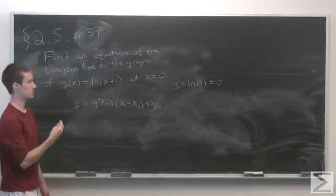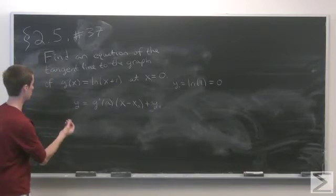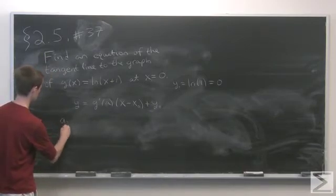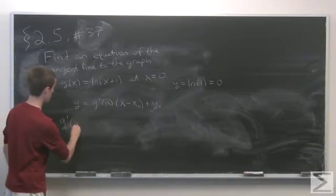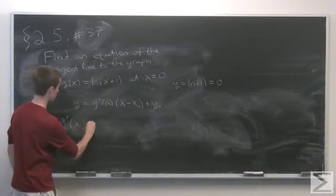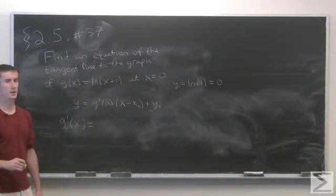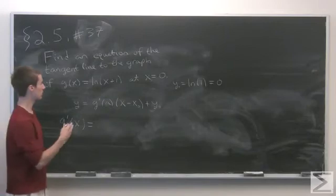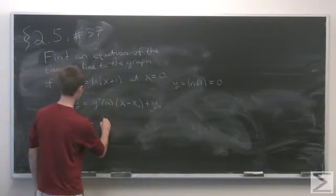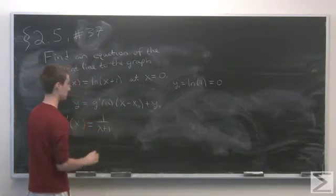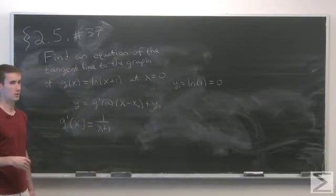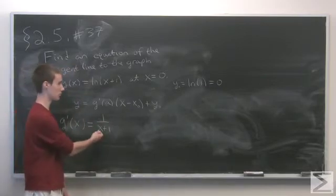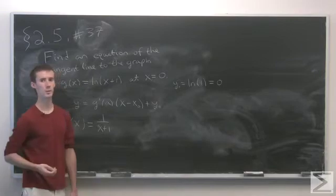The next step is to find the derivative of g of x. So g prime of x is the derivative of natural log of x plus 1, which gives us 1 over x plus 1. There's no need to apply the chain rule here, because even if we did, we'd just be multiplying by 1.